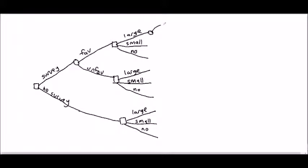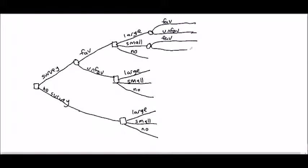The market can either be favorable or unfavorable. If the decision is do nothing, we don't draw any branches because the payoff will be the same whether for favorable or unfavorable market.